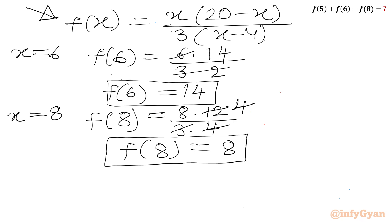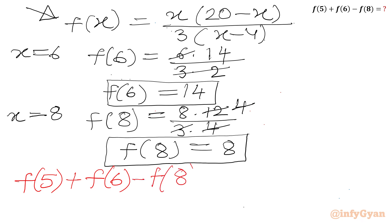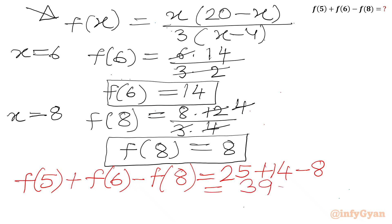We can now calculate our expression: f(5) + f(6) − f(8) = 25 + 14 − 8 = 39 − 8 = 31. Our final answer is 31. I hope friends you will like this video. Thank you so very much for watching. Do not forget to subscribe our channel. Bye-bye, take care.